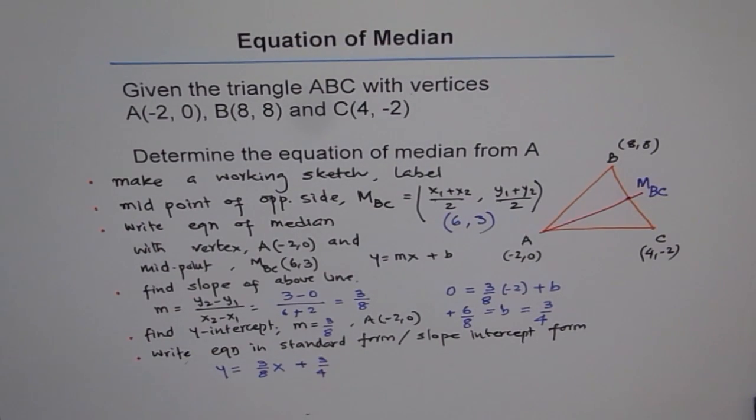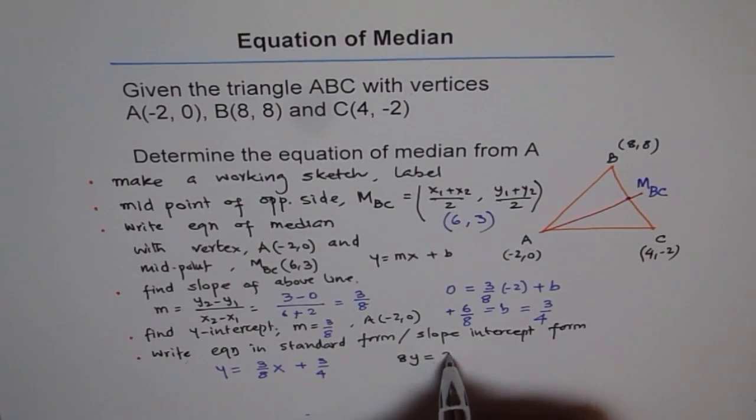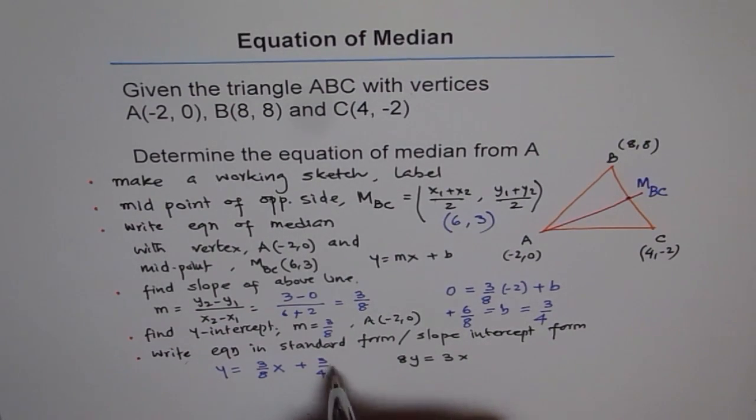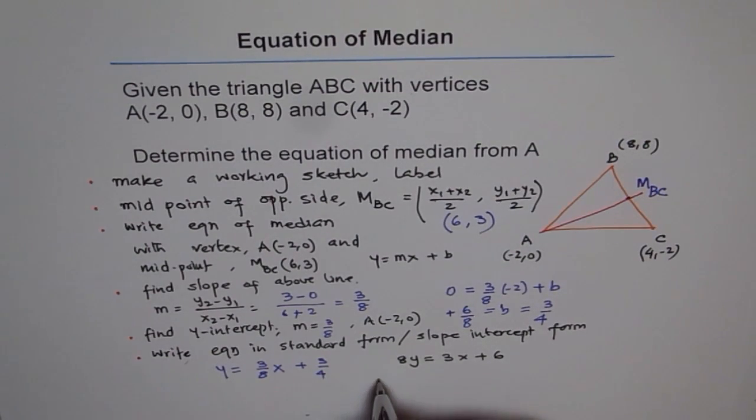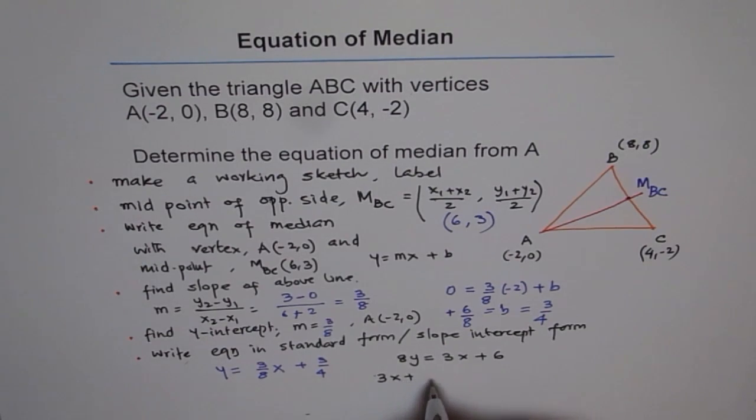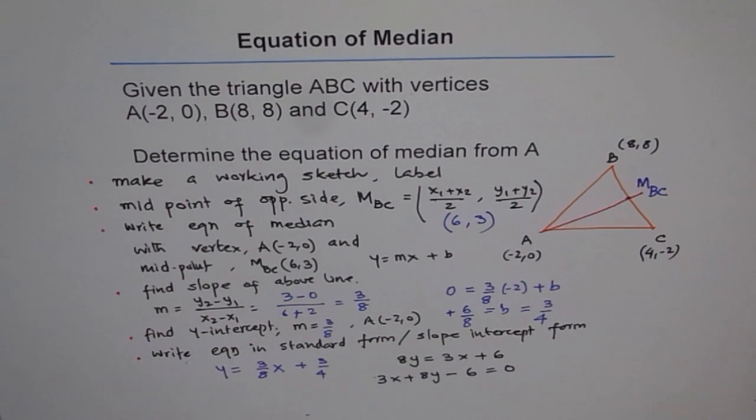Now, that is the answer and we could leave it like this. Or we could multiply, bring the terms together and then write it in standard form also. So what I'm trying to say is, multiply by 8 everything. In that case, you get 8Y equals 3X and this will be plus 6. And then from here, you can write 3X minus 8Y minus 6 equals 0. So that becomes standard form. What's your option? Both are perfectly fine.